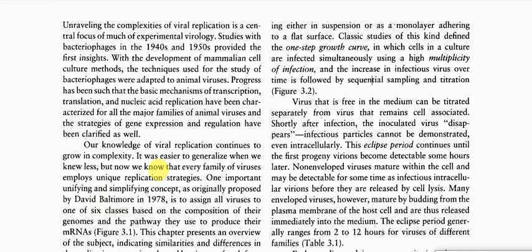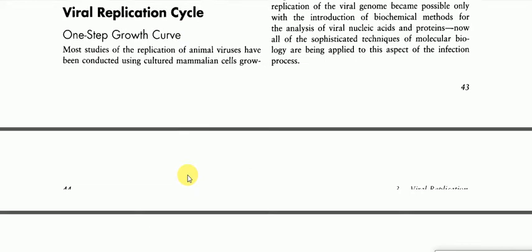Our knowledge of virus replication continues to grow in complexity. It was easier to generalize when we knew less, but now we know that every family of viruses employs unique replication strategies. One important unifying concept, originally proposed by David Baltimore in 1978, is to assign all viruses to one of six classes based on the composition of their genome and the pathway they use to produce their mRNAs. This is shown in figure 3.1.